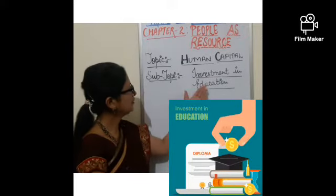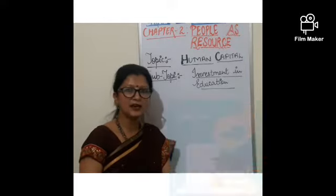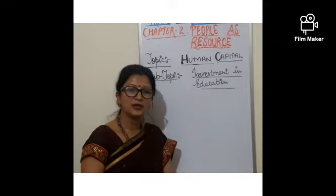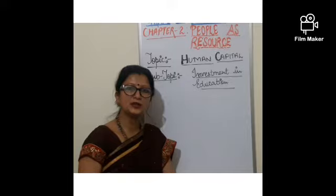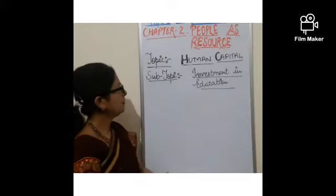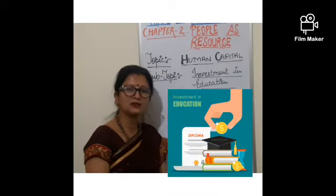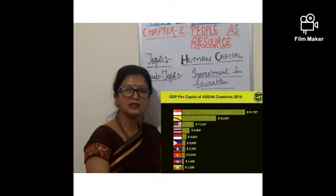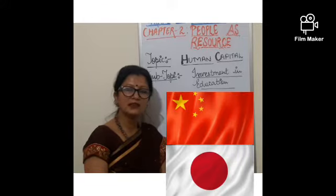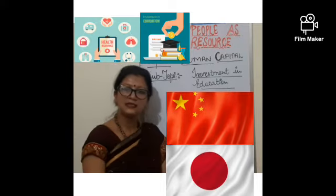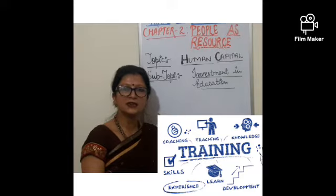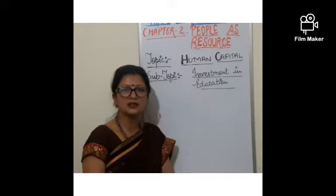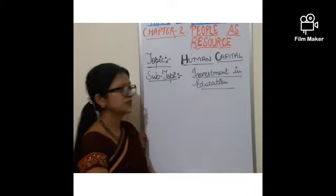Let us briefly discuss the first aspect — investment in education — and how it converts people as resource into human capital. A good example is China and Japan. Though these countries have the highest population, they are among the most developed. Why? Because they have invested heavily in education and healthcare, and provided their population with wonderful skill-based training, enabling them to convert their human capital for national growth.